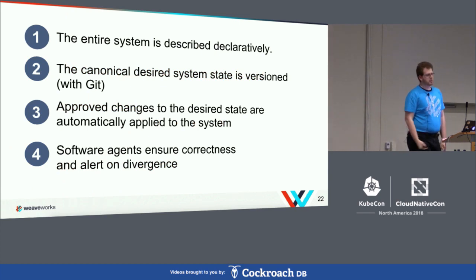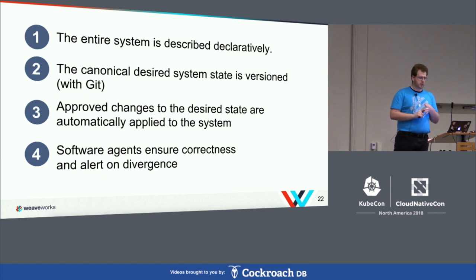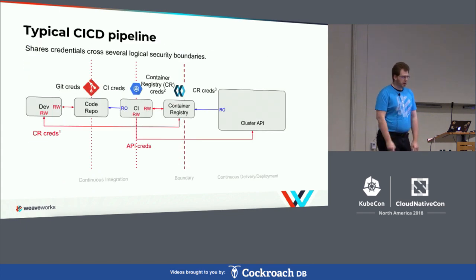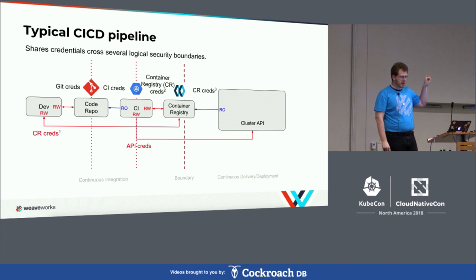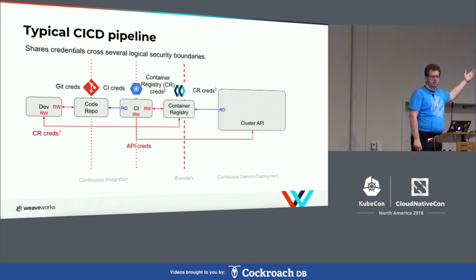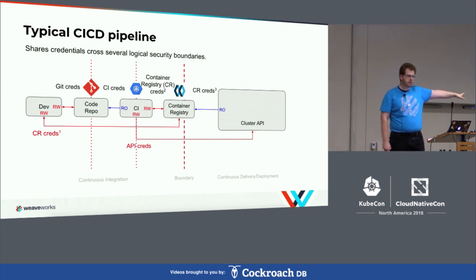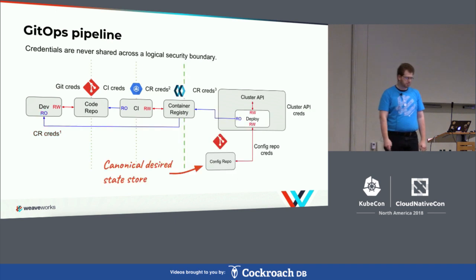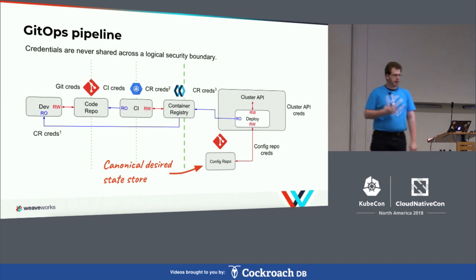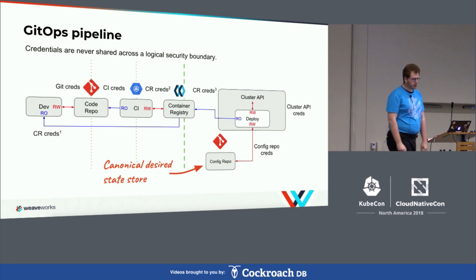In a traditional pipeline, the CI system has access to your cluster and pushes stuff in when a new image is built. What we're doing is removing all control from the CI pipeline and moving it into a config repository that keeps the canonical state of the system. You have one repository for your application code and one for your system configuration — that's what drives your cluster. The permissions to modify the cluster no longer live anywhere on the container registry, CI, or your code repository.